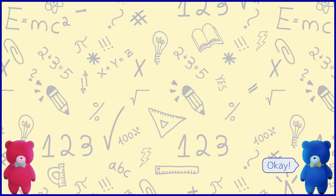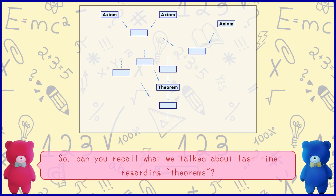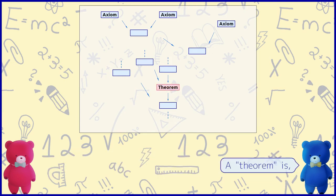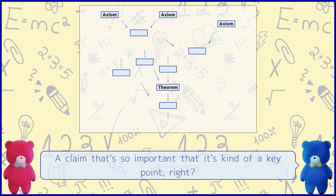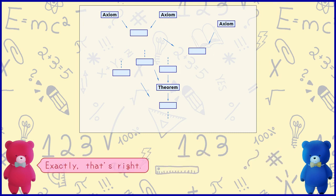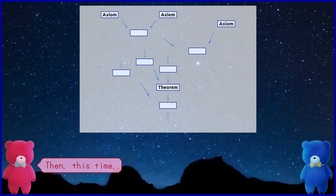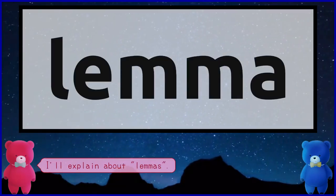Okay. So, can you recall what we talked about last time regarding theorems? A theorem is within that axiomatic system, a claim that's so important that it's kind of a key point, right? Exactly, that's right. Then, this time I'll explain about lemmas.